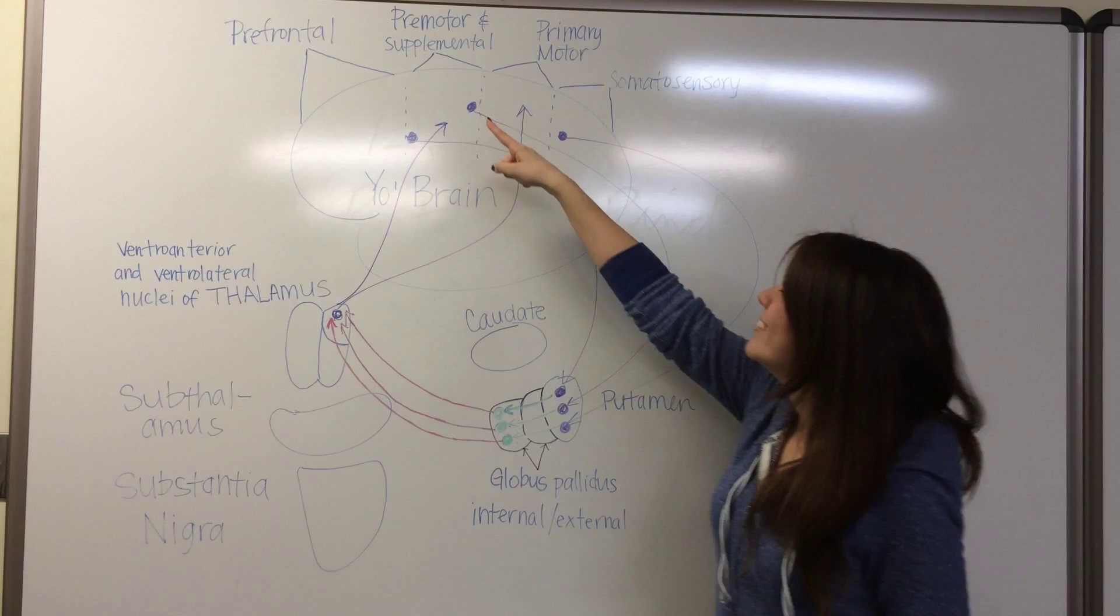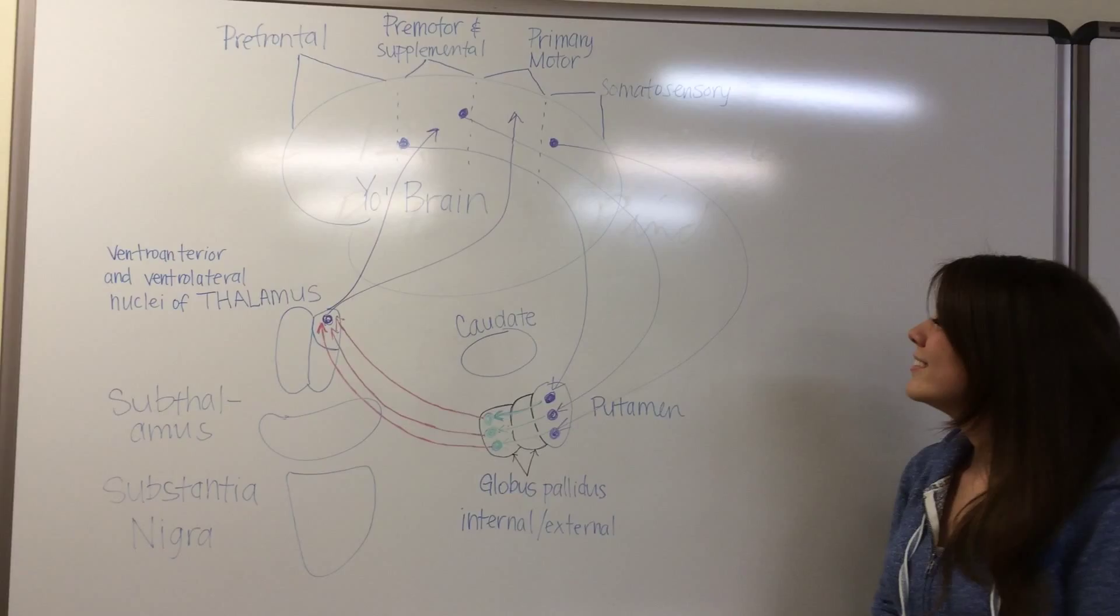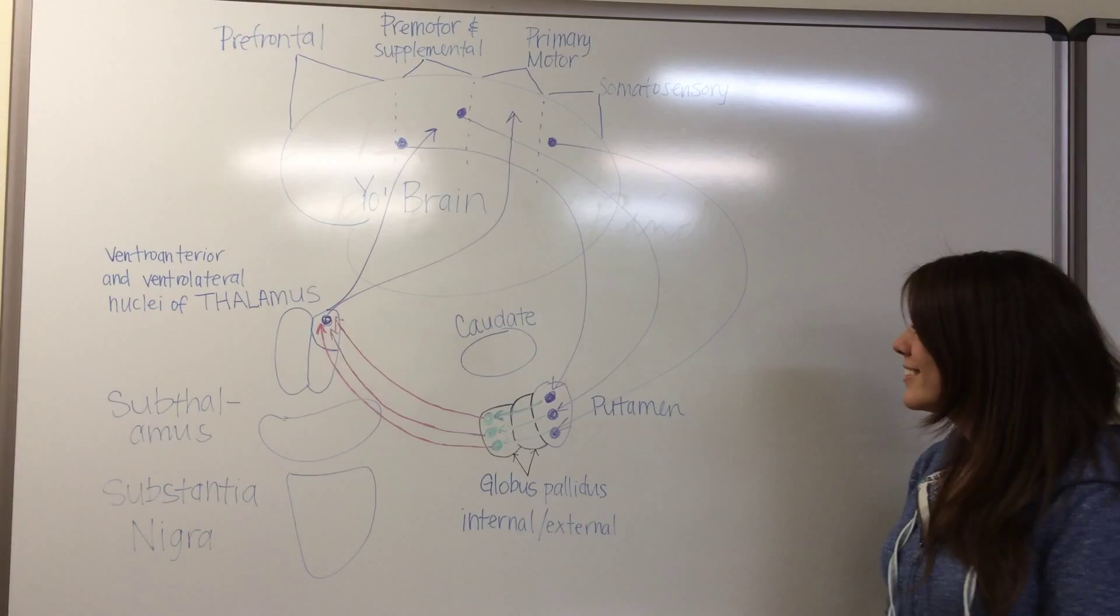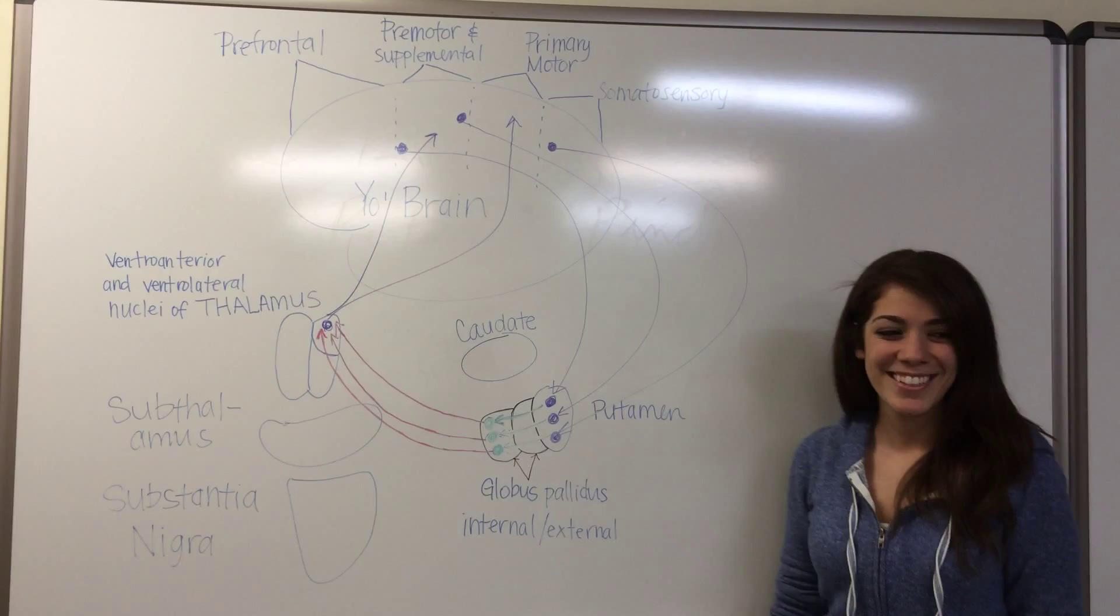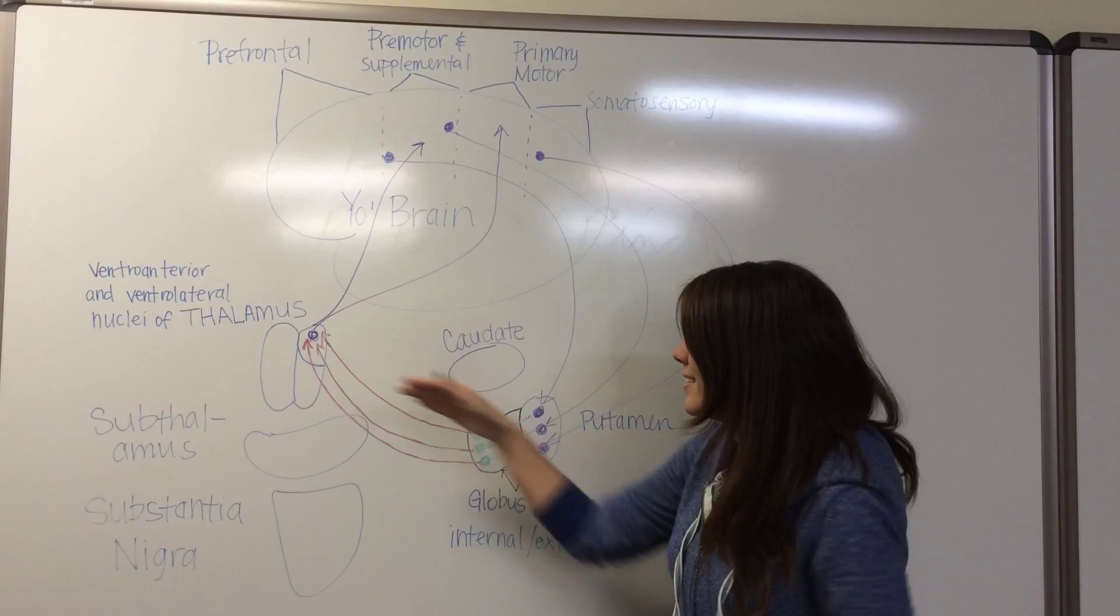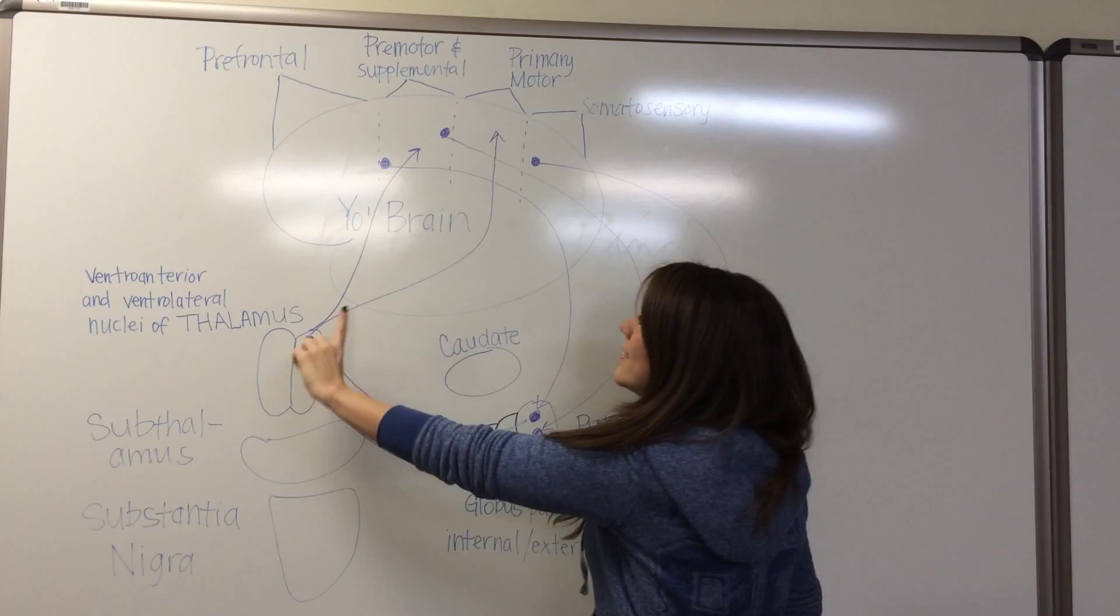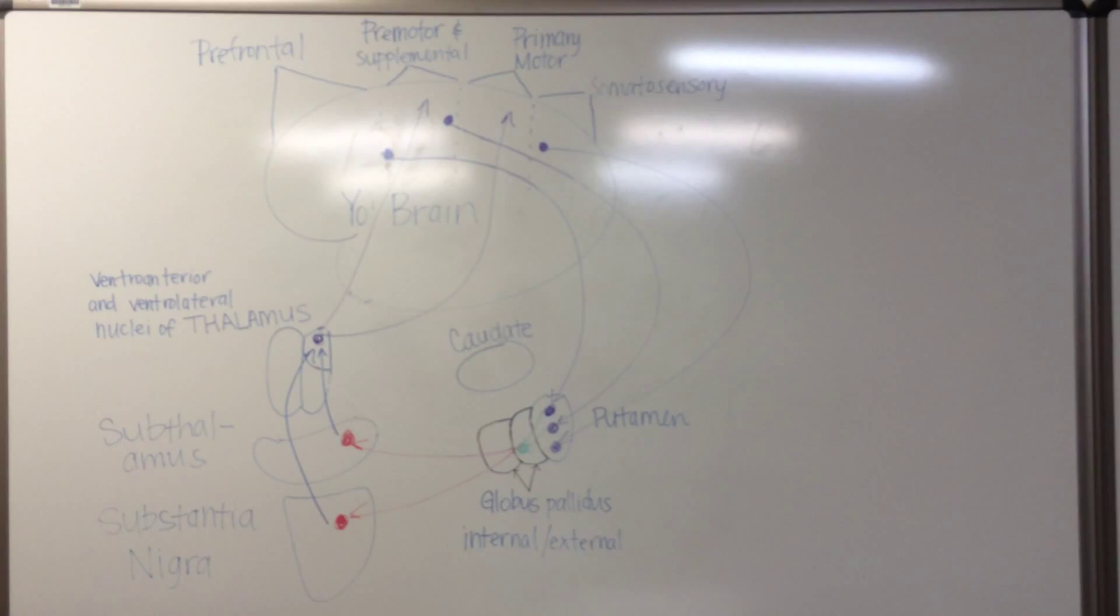The primary putamen circuit mostly comes from the premotor, supplemental motor, and somatosensory cortex. And then it sends chemical signals to the putamen which is highlighted in purple arrows. Next it sends chemical signals to the globus pallidus which is highlighted in green arrows. Thirdly, the globus pallidus sends chemical signals to the thalamus which is highlighted in red arrows. Finally, the thalamus sends the signals back to the premotor and supplemental and the primary cortex for it to send signals to the motor neurons.